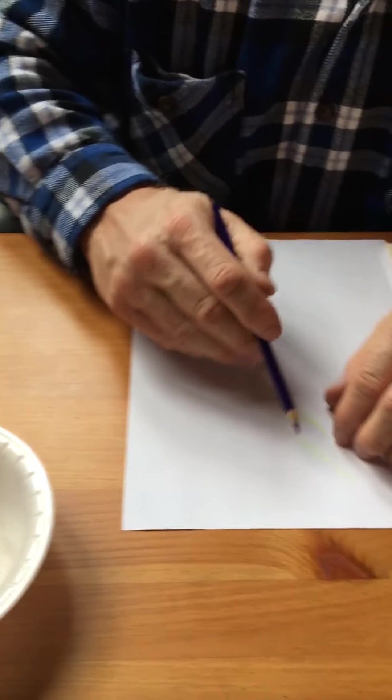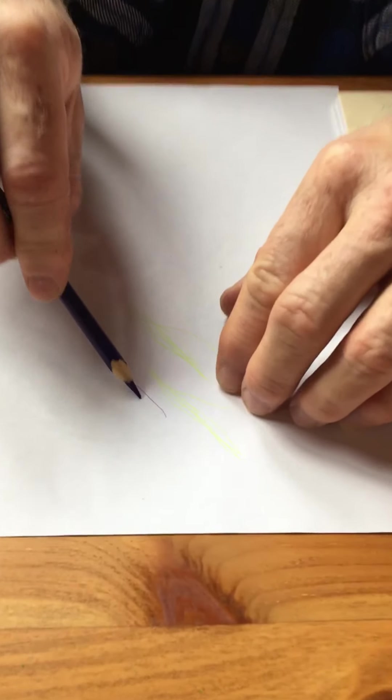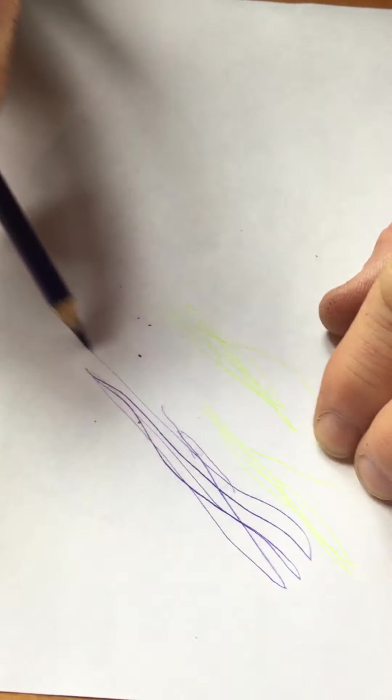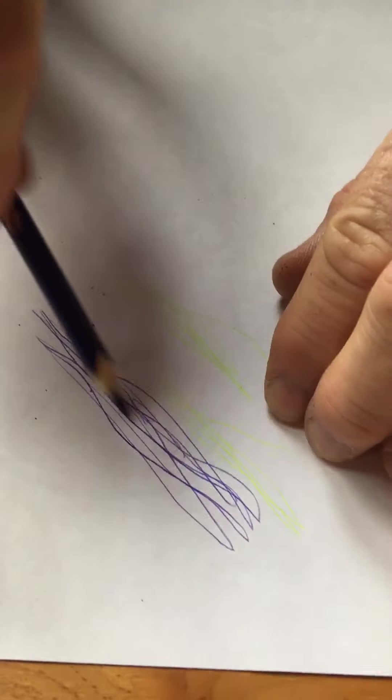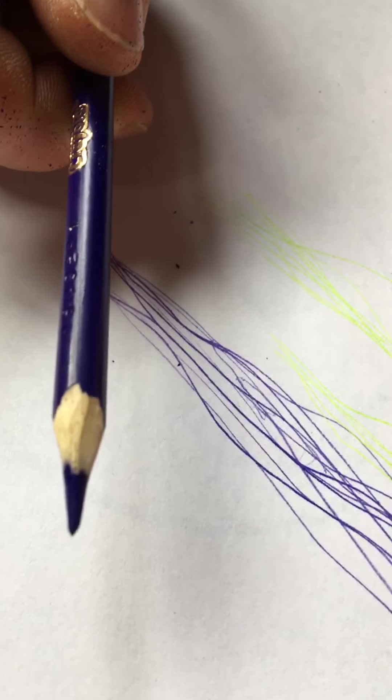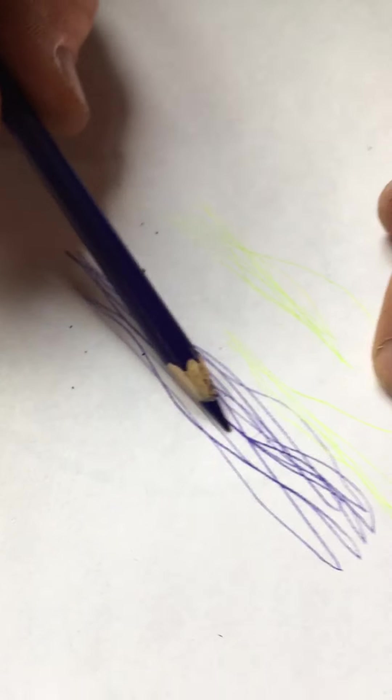When you get done, what you can do is—you can see I'm rotating the pencil as I go back and forth. If you really want to have a real nice point on the end, you see that point right on the end. And that's one of the secrets we may talk about later.